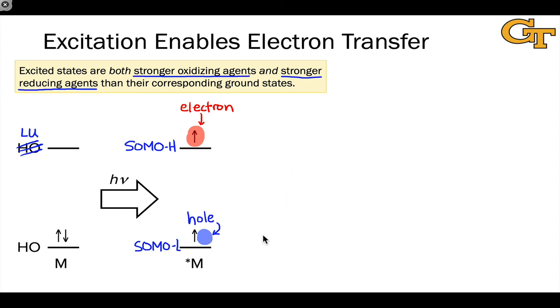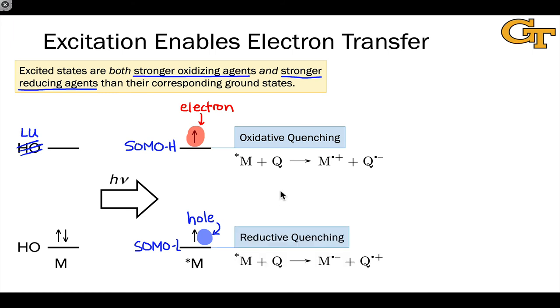The hole here has oxidizing power and the electron here has reducing power and so we can talk about oxidative or reductive quenching of an excited state depending on what happens. Is the electron donated or is an electron accepted? In an oxidative quenching situation, the electron in the SOMO-H is donated to the quencher forming the radical cation of the former excited state and a radical anion of the quencher. In so-called reductive quenching, the excited state accepts an electron from Q forming the radical anion of the original excited state M and the radical cation of Q.